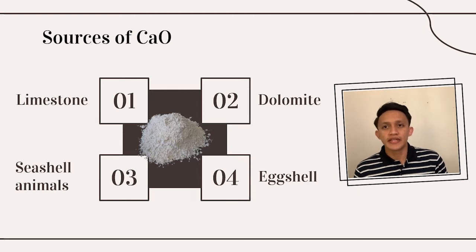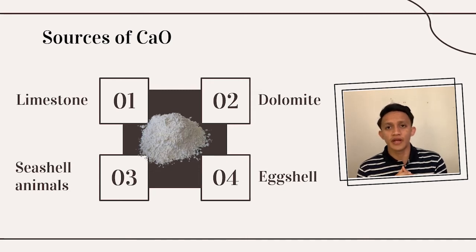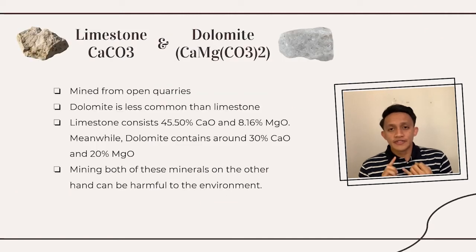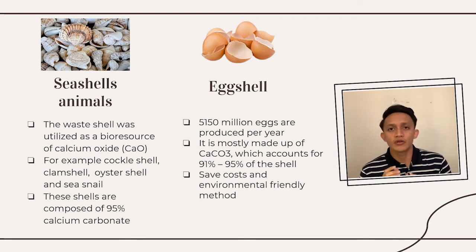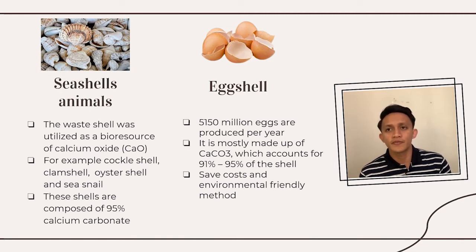I am Arif Padilla. I will present about the sources of calcium oxide. There are four sources: limestone, dolomite, seashell animals, and eggshell. Most limestone and dolomite are mined from open quarries, though underground mining is also used. The basic elements of surface mining are overburden removal, drilling, blasting, and hauling ore to the crushing and processing plant. Dolomite is less common than limestone; limestone consists of 45.5% calcium oxide and 8.16% magnesium oxide.